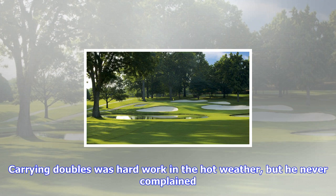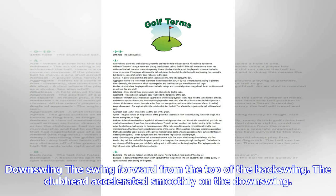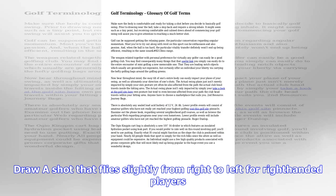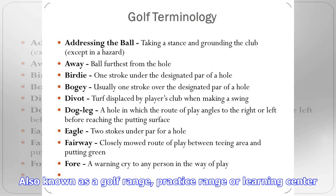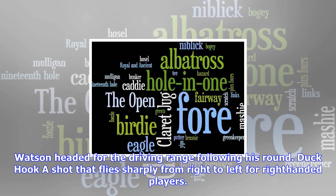Croquet style: a putting stance popularized by Sam Snead in which the player stands aside the ball, facing the hole, holds the club with a widely split grip, and strikes the ball with a croquet-type stroke. A similar style, in which the player faced the hole with the ball positioned between the feet, was banned by the United States Golf Association. A croquet style putting stroke is popular among players who suffer from the yips.